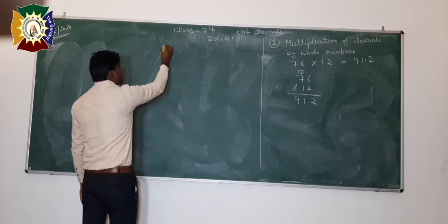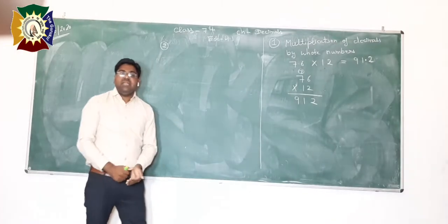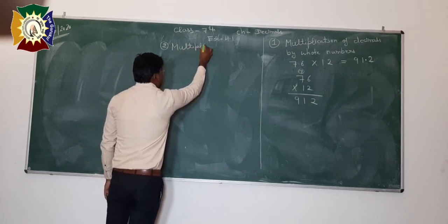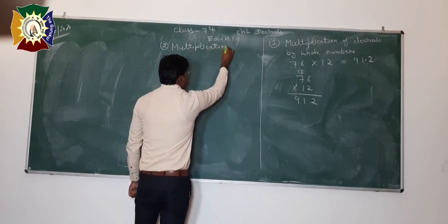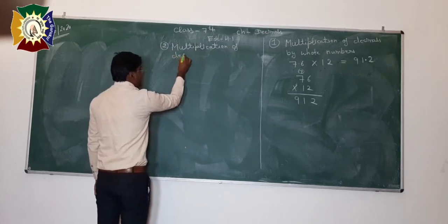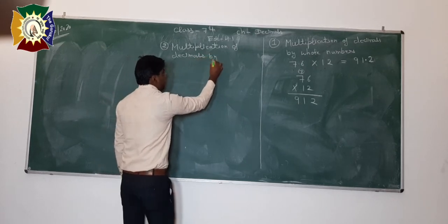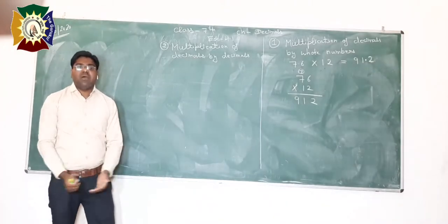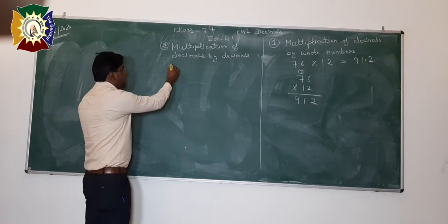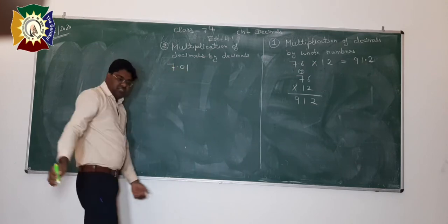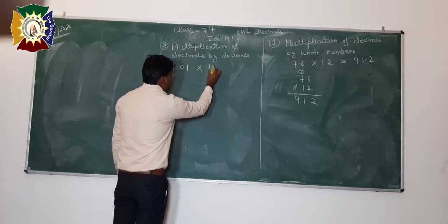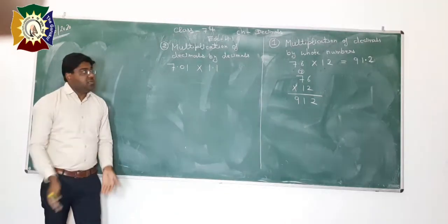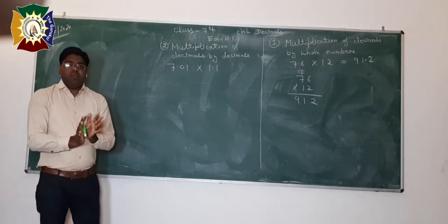Now the second thing: multiplication of decimals by decimals. We will learn this by taking an example. I am taking 7.01 and multiplying by 1.1 — both are decimal numbers. We have to find their product. Again, the same procedure: first find the simple multiplication, treating them as whole numbers.